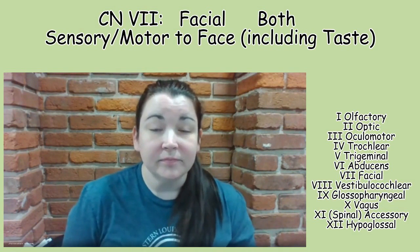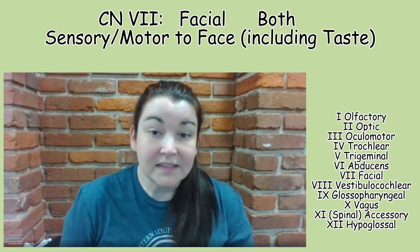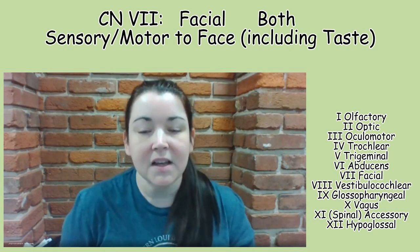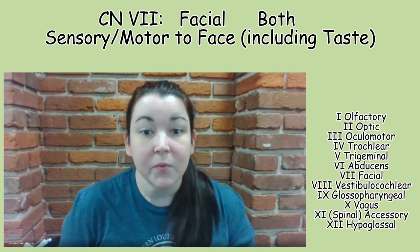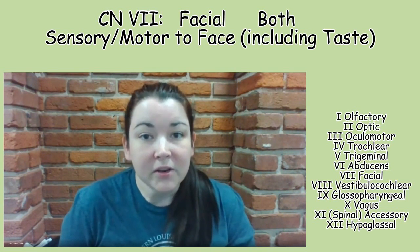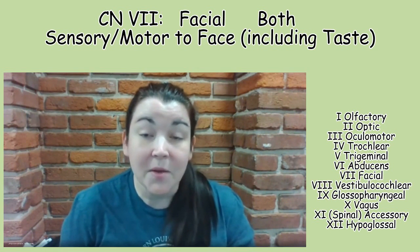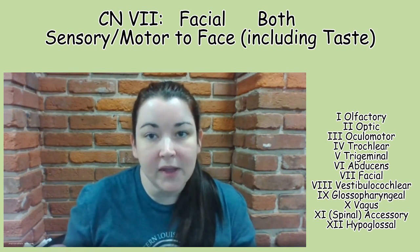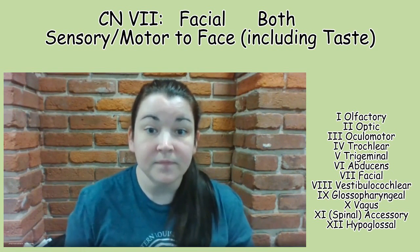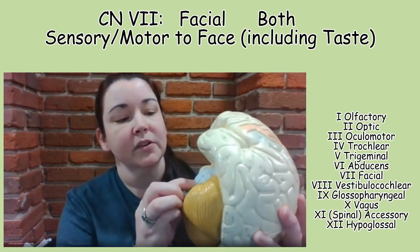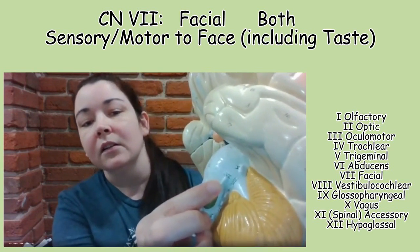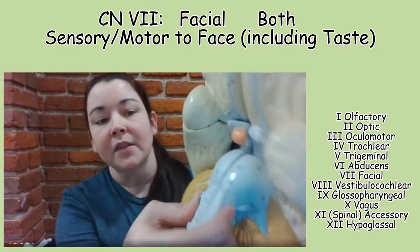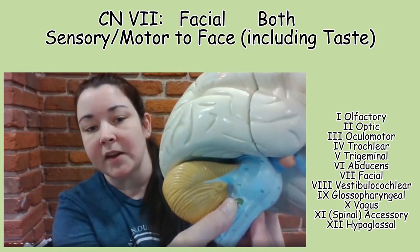Now it's time for facial, cranial nerve seven. Facial deals with many things — it can deal with taste and also with movement. So it is both sensory and motor. Facial is closer to the hip of the hippocampus seahorse shape. On the model you'll notice it right above the olive — that's facial, identified on the other side as number 119.